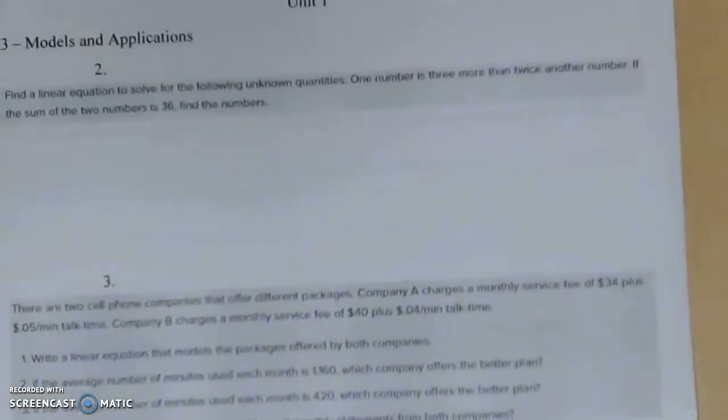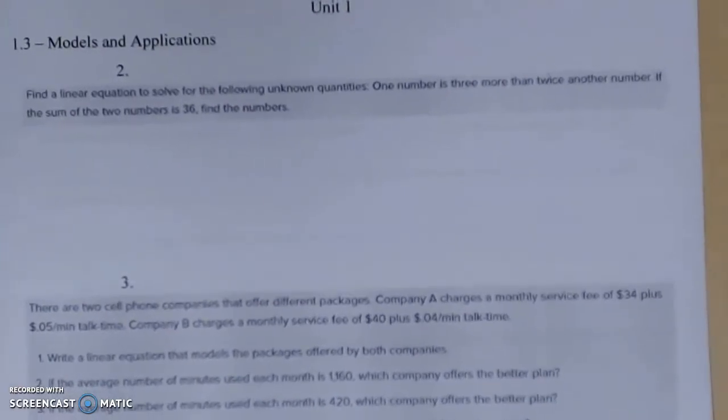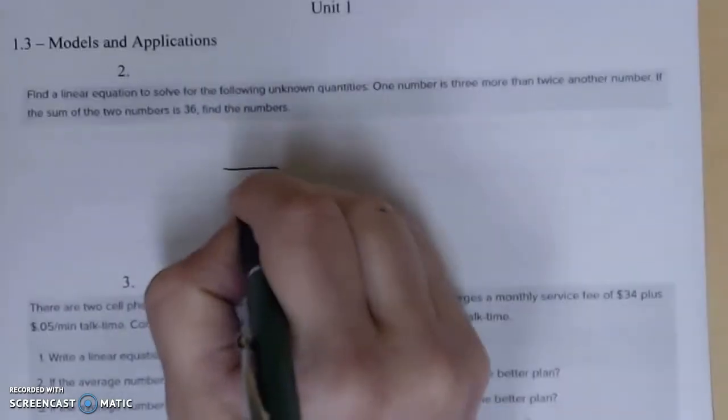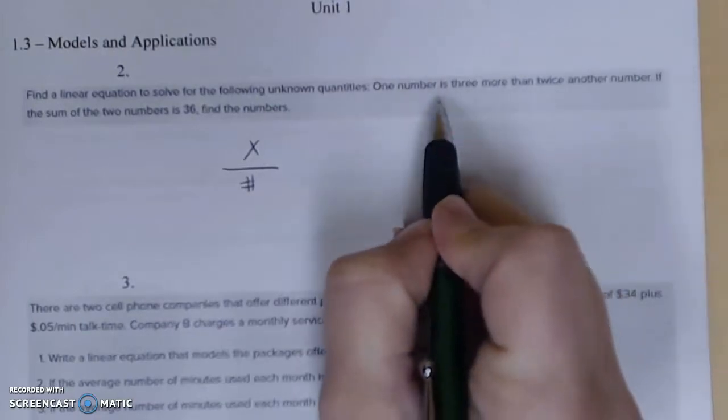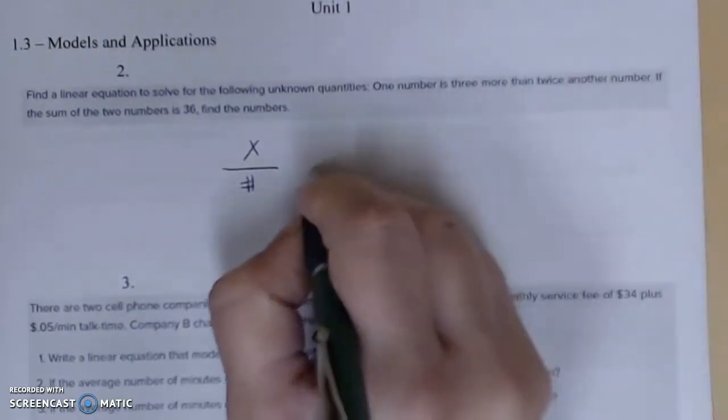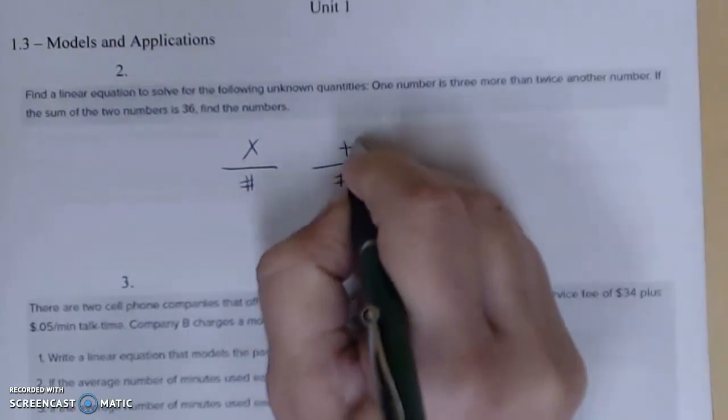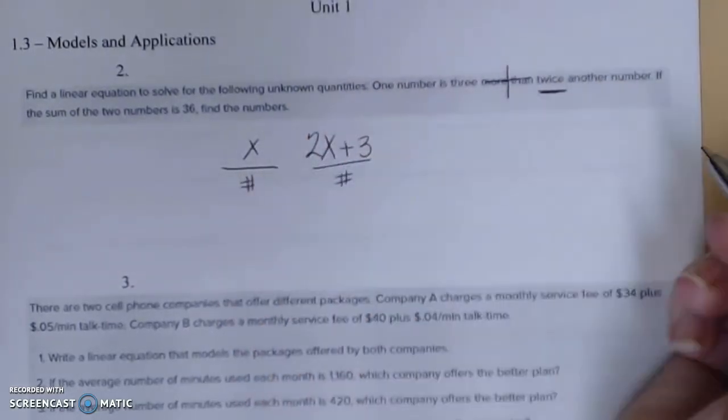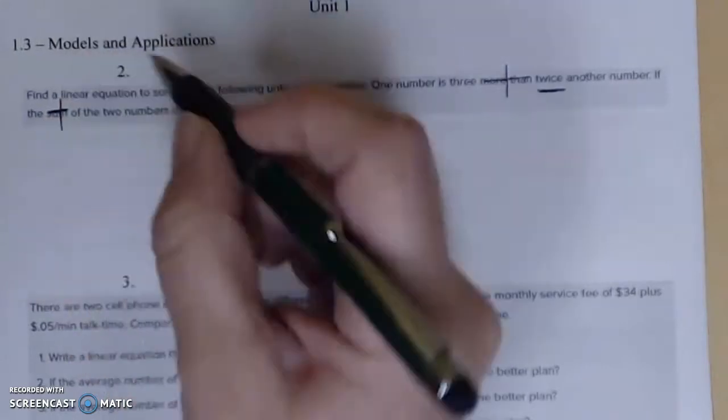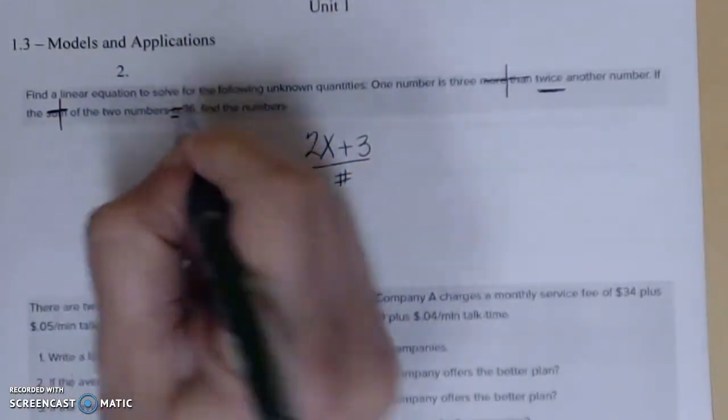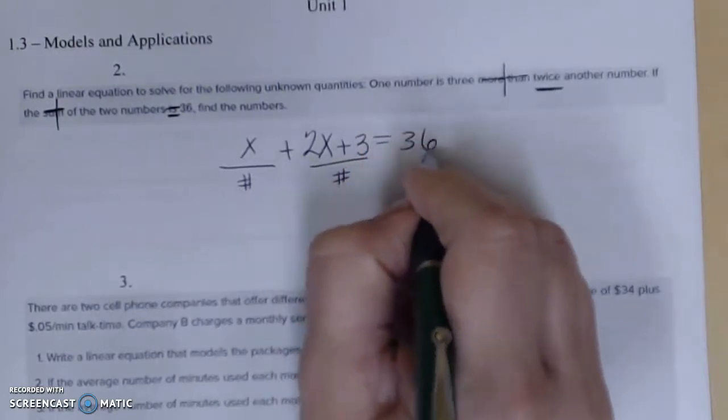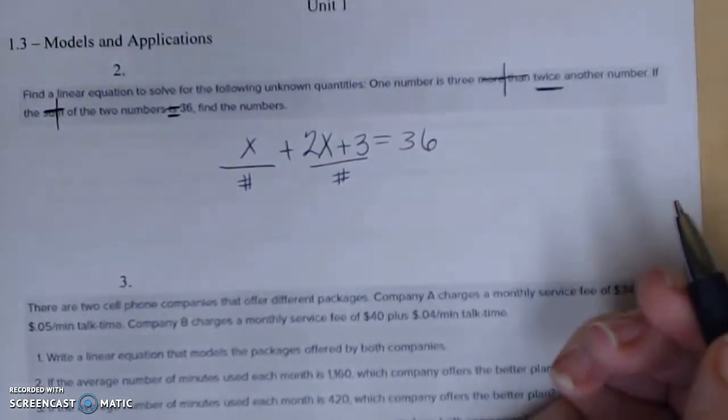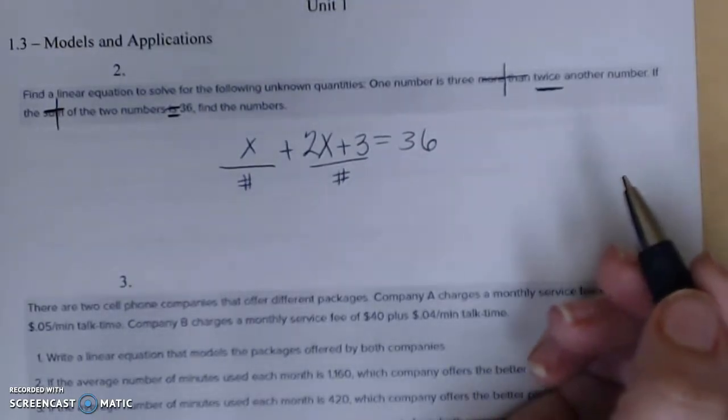Let's work another one. Number two here at the top. Find a linear equation to solve for the following unknown quantities. One number, okay so one number let's call it x, is three more than twice another number. Okay so here's my other number. It is three more, there's my plus sign. Twice we've already seen that on the first page so 2x. If the sum of the two numbers is 36, so I'm going to add these up and I should get 36. There's a process. Go slow. Don't freak out because there's words in math. Figure out what you know, what can you work with.